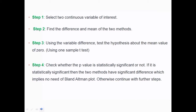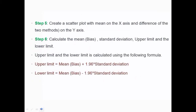Why do we need a non-significant p-value? Because we are testing that the difference should be almost zero — that there is no difference between the two methods. Our null hypothesis is: there is no difference. The alternative hypothesis is: there is a difference. So if we get a significant p-value, there is a difference between the methods. Only when we get a non-significant result can we say there is no difference. Step five: create a scatter plot with the mean on the x-axis and the difference on the y-axis.